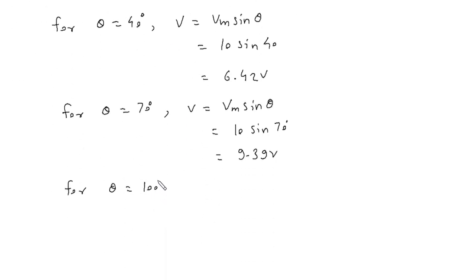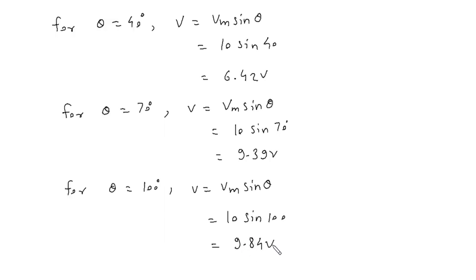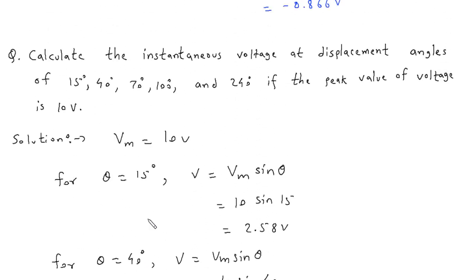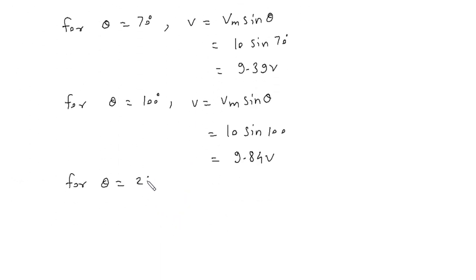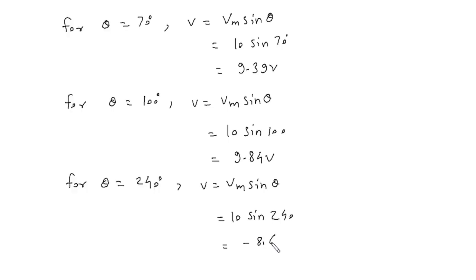For theta equal to 100 degrees, V is equal to Vm sin theta, Vm is 10, sin 100, giving 9.84 volt. And the last one: for theta equal to 240 degrees, V is equal to Vm sin theta, so Vm is 10, sin 240, this will be minus 8.66 volt.